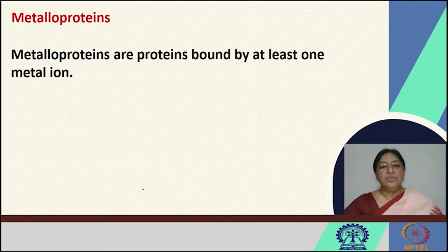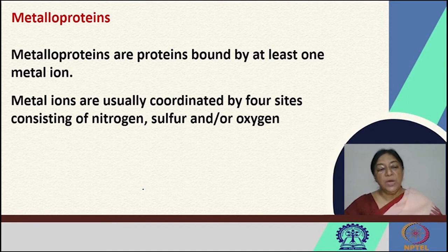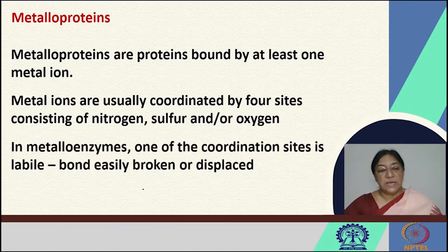When we look at metalloproteins in general, we try to understand how these metal ions are bound in the protein. Metal proteins can contain one or more metal ions and these are usually coordinated by four sites consisting of nitrogen, sulfur, and/or oxygen. These coordinating moieties can come from the protein backbone chain or from other associated molecules. In metalloenzymes, one of the coordination sites is labile, meaning that bond is easily broken or displaced for an enzymatic reaction to occur.